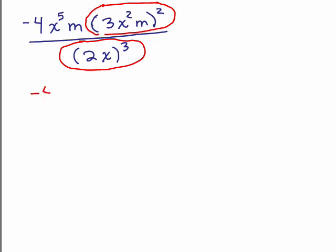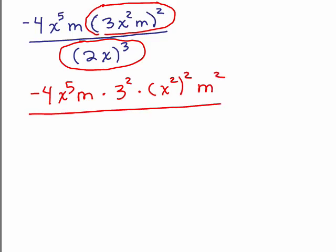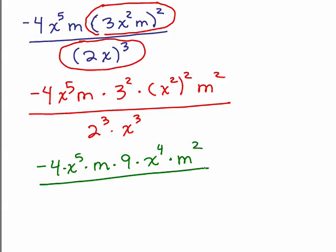What does that give me? We still have the negative 4, x to the 5th m. And then, I've got 3 squared. Could you do that in your head? It's fine or you could write 3 squared and I've got x squared squared and I've got m squared. That's going to be in the numerator. And in the bottom, I'm going to have a 2 cubed and an x cubed.